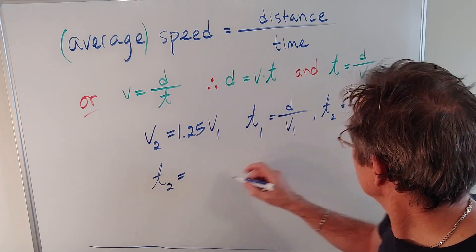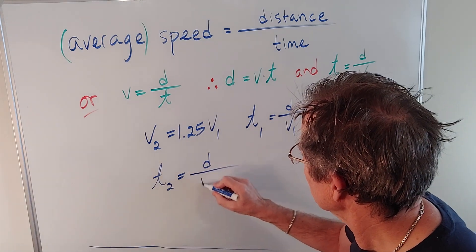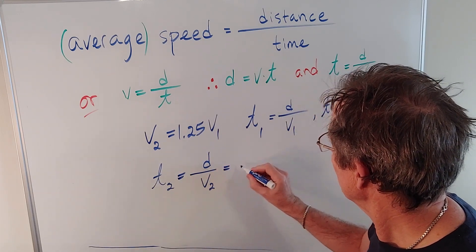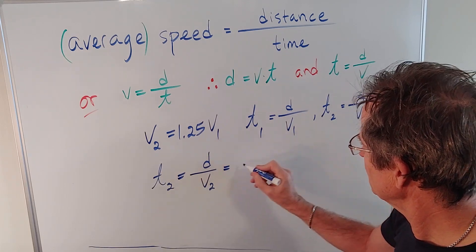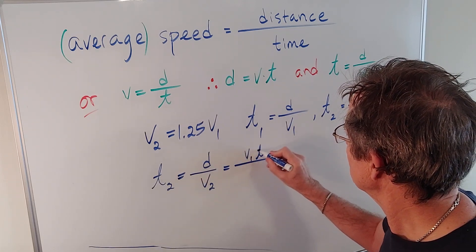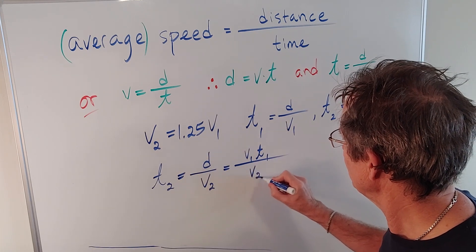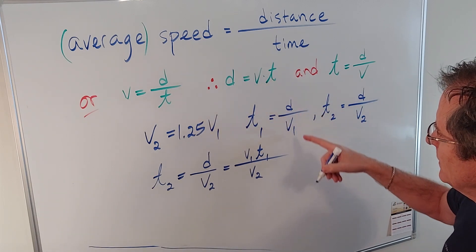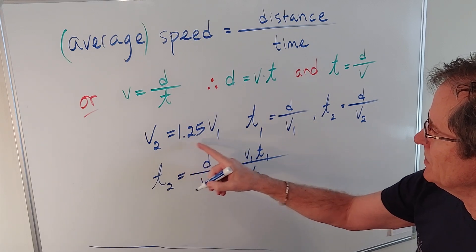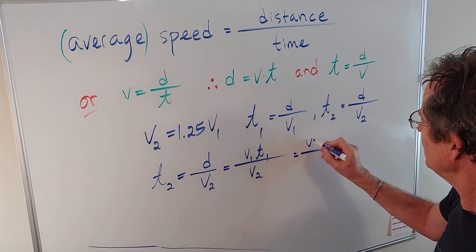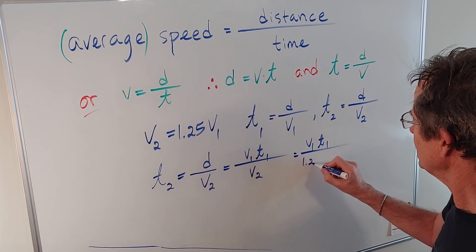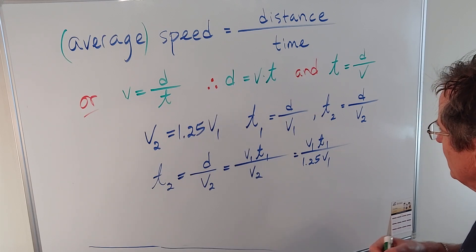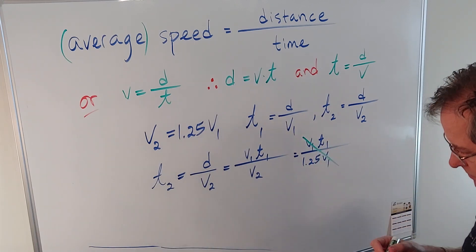Well, t2 is d over v2, which equals, using this formula, v1, t1 over v2. Basically, I'm just using this for d. And if I said v2 is that, I get v1, t1 over 1.25 v1. What happens to the v1s? They cancel, so it doesn't matter how fast your original speed was.